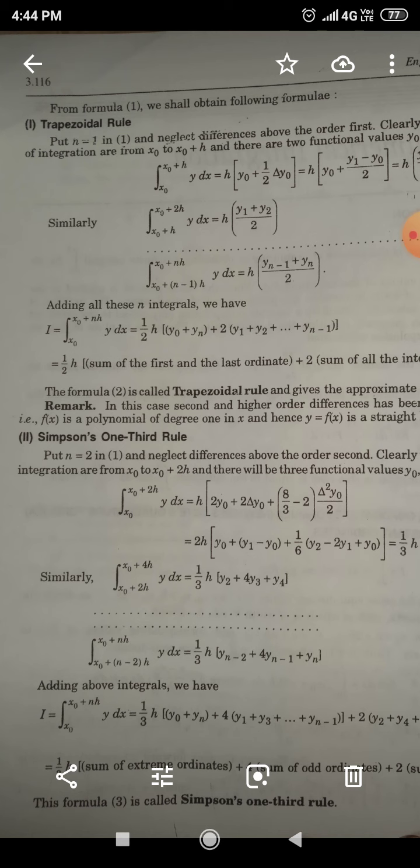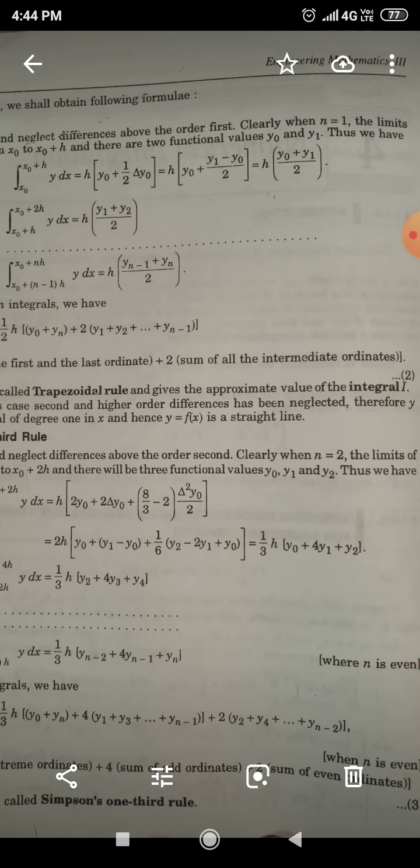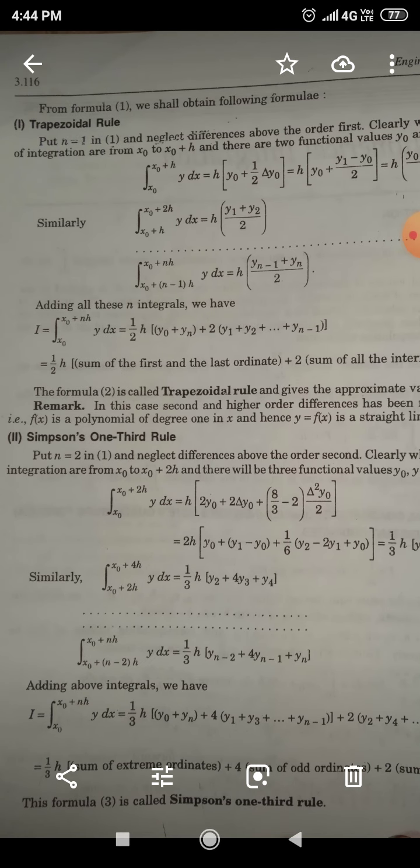So x_0 to x_0 plus 2h Y dx equals, putting value n equals 2 in the expression, it will give H[2y_0 plus 2 delta y_0 plus (8/3 minus 2) delta 2y_0 upon 2] and after solving we get 1/3 H [y_0 plus 4y_1 plus y_2].